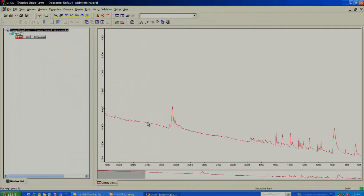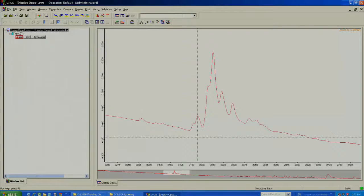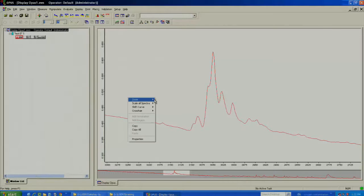Now you can see a signal. You can zoom in on it by right-clicking, then click Zoom, and then click Zoom In. You click and make a little box, and then click where you want the box to zoom in. If you want to completely zoom out, right-click, click Scale Off Spectra, and then click Show Everything.